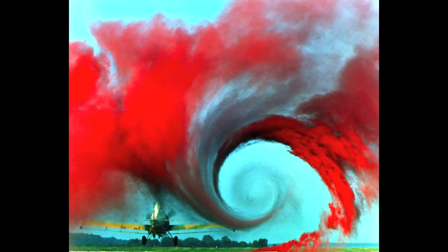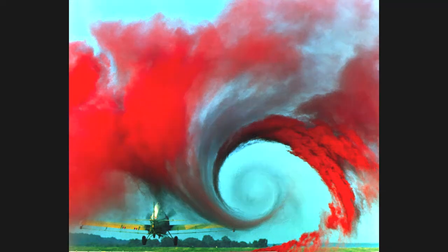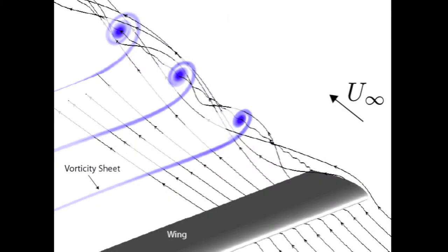Fluid passing over an airfoil produces trailing vortices, as seen in this NASA test picture. The vortices form when fluid at higher pressure from under the airfoil flows around the wingtip. This decreases the lift produced by the airfoil.